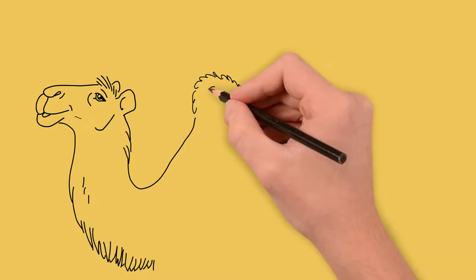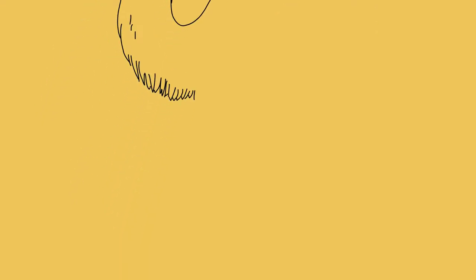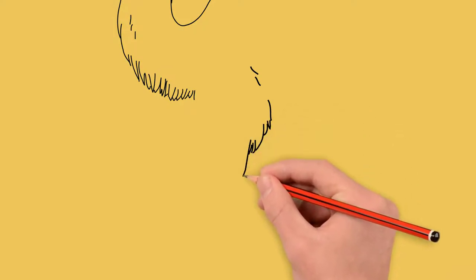Draw two front legs. First we draw one leg. She is put forward. Our camel is walking. We draw a hoof.